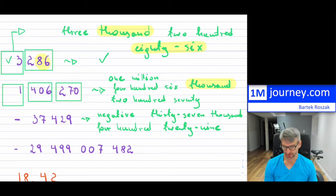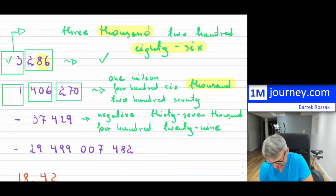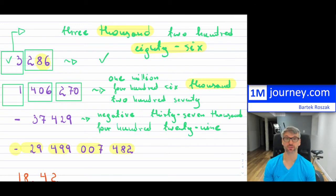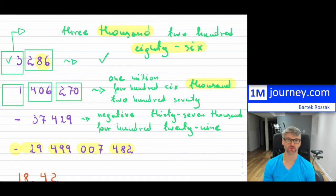Note that in all these examples so far, I haven't talked about decimal naming - these are just regular integer numbers. This last large one is really complex. We have negative 29 billion, four hundred ninety-nine million, seven thousand four hundred eighty-two. Most people reading this would probably stick an 'and' somewhere, but formally you cannot use 'and' unless there's a decimal.